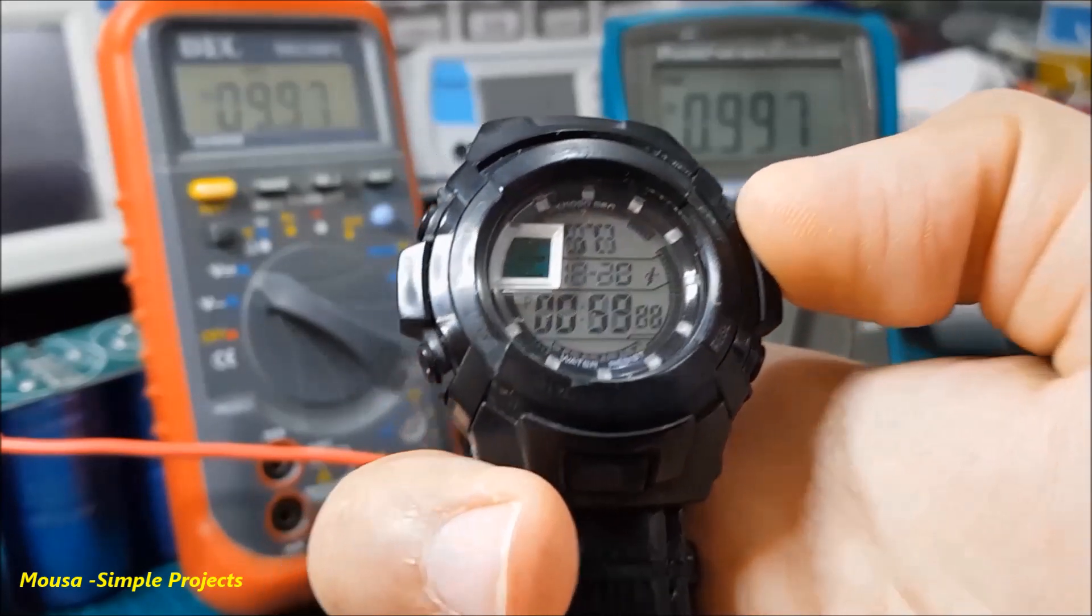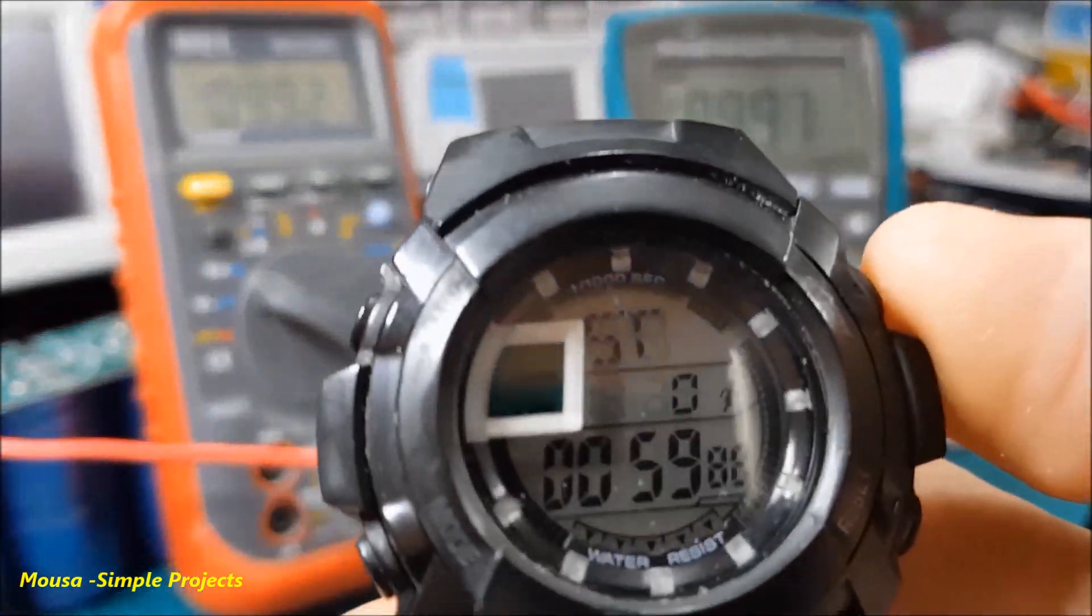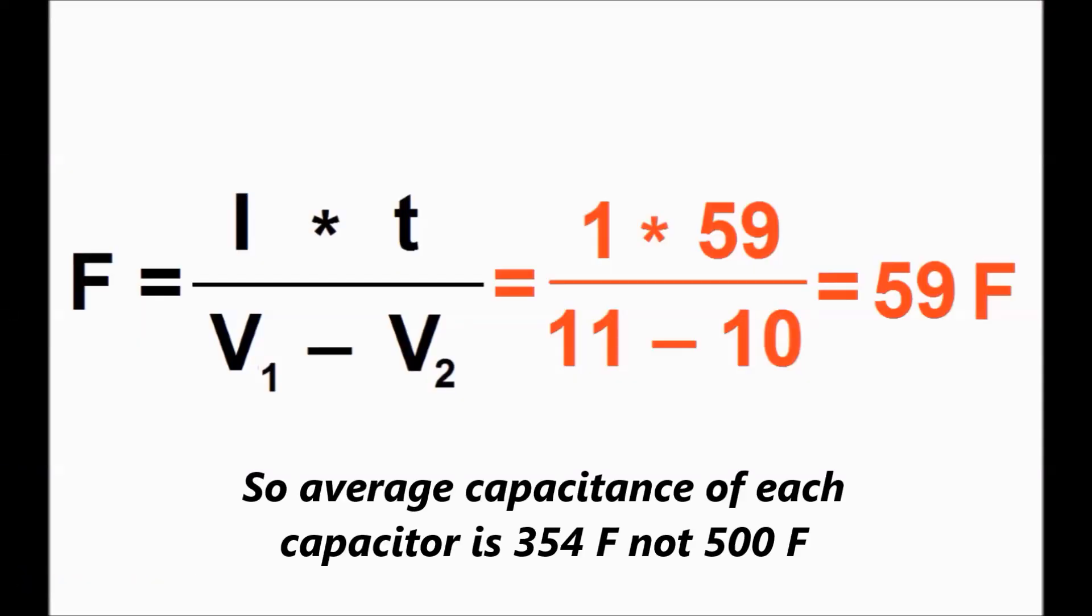As you can see, it takes 59 seconds. If you use this formula, you will find that the total real capacity will be about 59 farads.